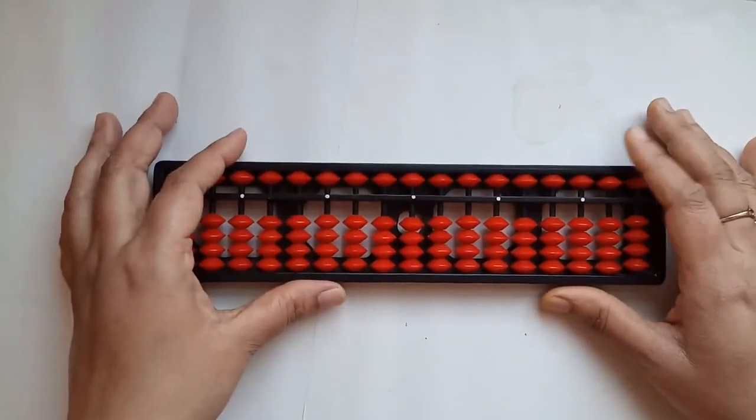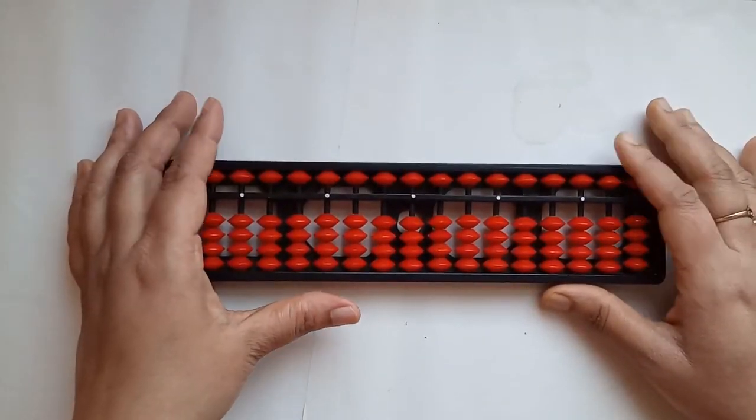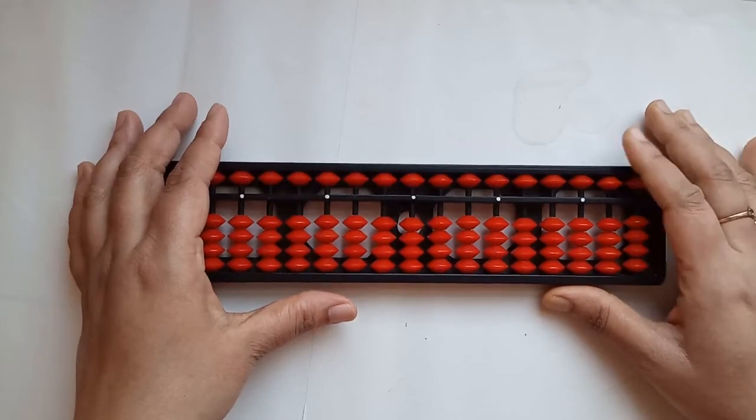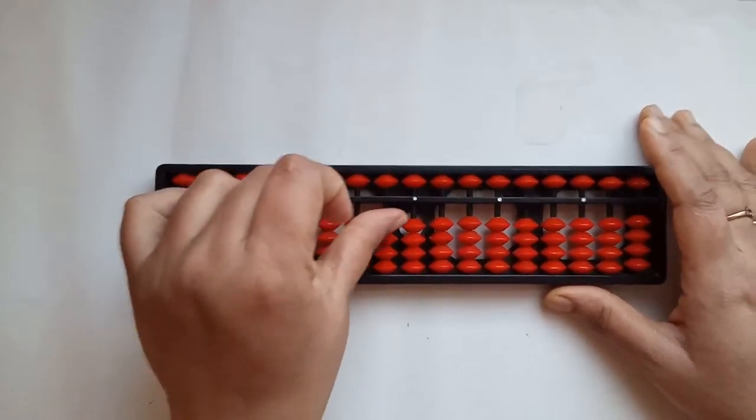Now, let's try another example. Say, 17 minus 8. We write 1, 7, 17.